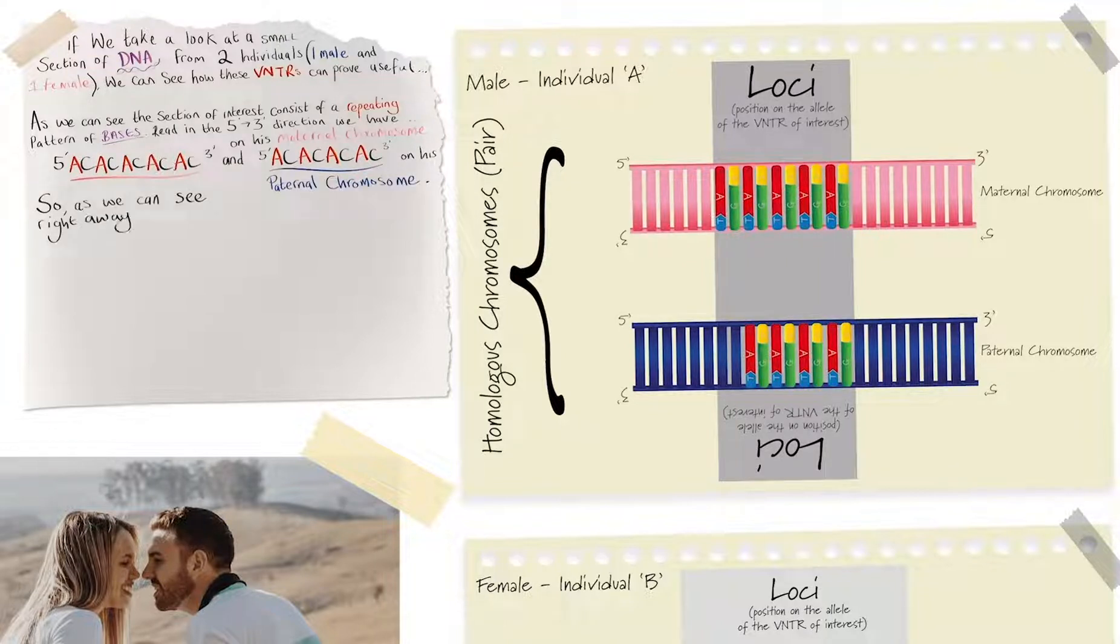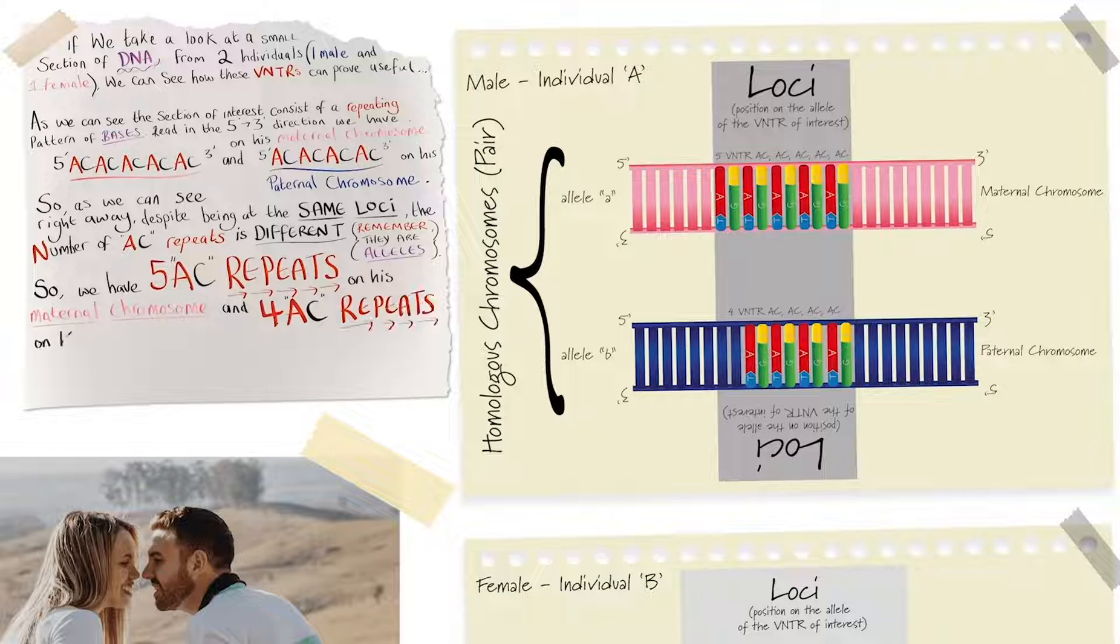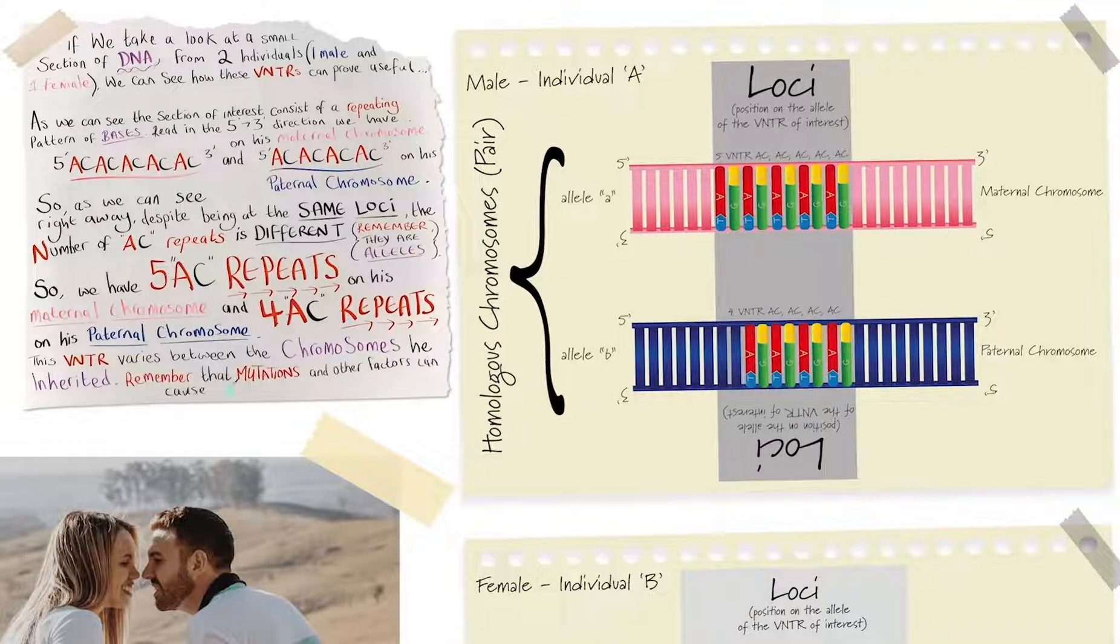So we can see right away, despite being at the same loci, the number of AC repeats is different. Remember, they are alleles. So we have 5 AC repeats on his maternal chromosome, and 4 AC repeats on his paternal chromosome. This VNTR locus varies between the chromosomes he's inherited. Remember that mutations and other factors can cause variations too.